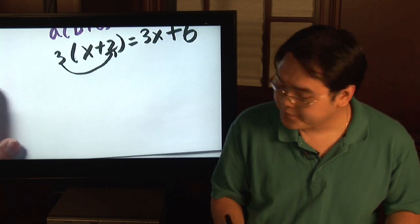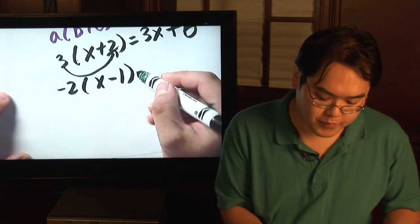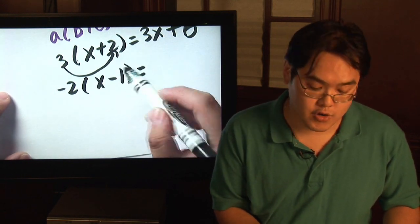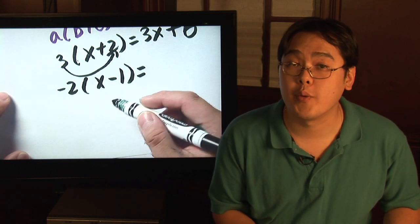Suppose you have negative 2 times x minus 1. What that means is you're going to take the negative 2 and you're going to multiply by everything on the inside. So here we go once again.